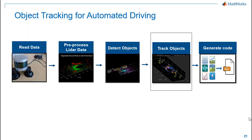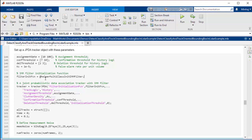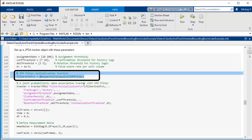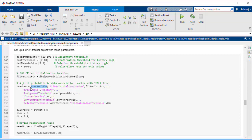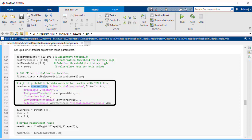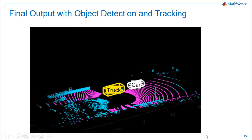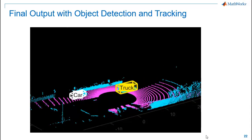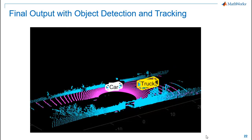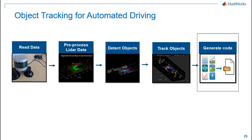Now using these bounding boxes as inputs to our tracker, we'll track these objects through the entire point cloud sequence. We'll use an IMM filter which is a great way to create complex trackers. In this demo, we are using a JPDA tracker that can track multiple targets from multiple sensors. You can observe that the car and truck are being tracked through the entire sequence. As the final step, let's see how to generate code for the object detection and tracking algorithm we have developed.